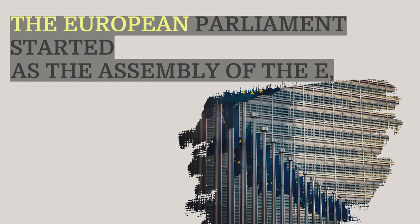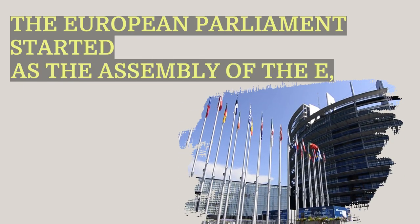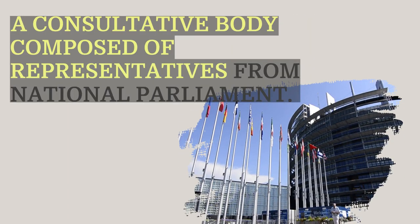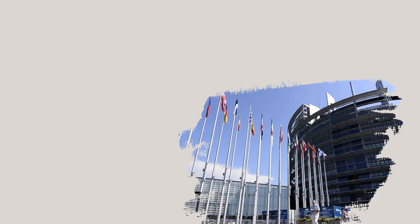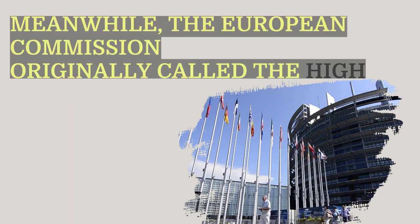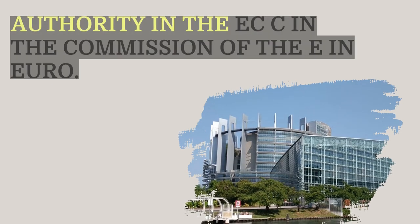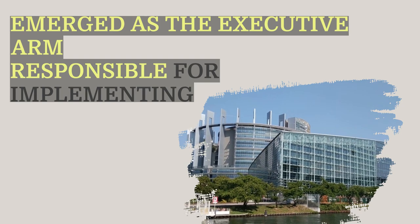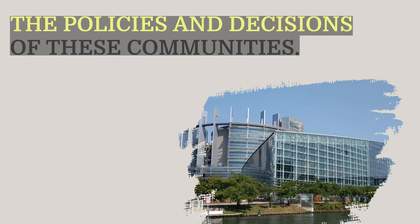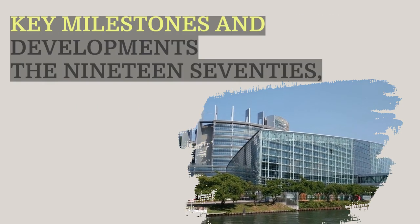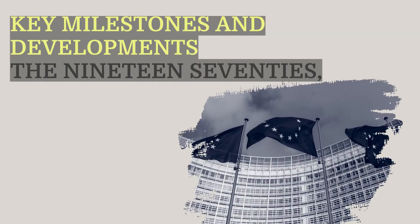The European Parliament started as the Assembly of the EEC, a consultative body composed of representatives from national parliaments. Meanwhile, the European Commission, originally called the High Authority in the ECSC and the Commission of the EEC in Euratom, emerged as the executive arm responsible for implementing the policies and decisions of these communities.